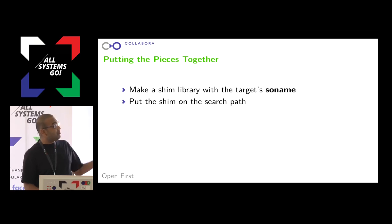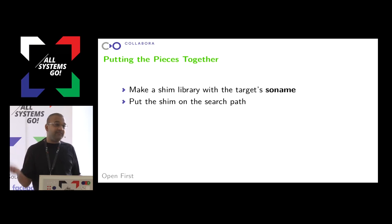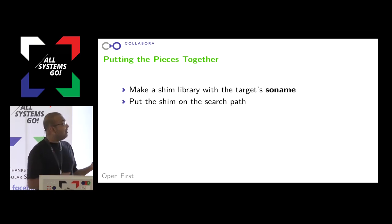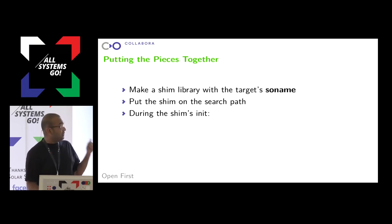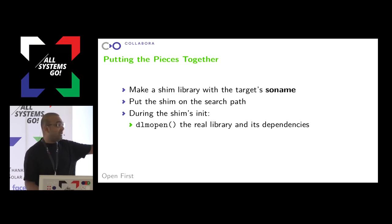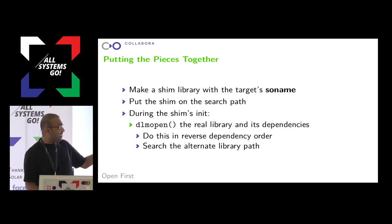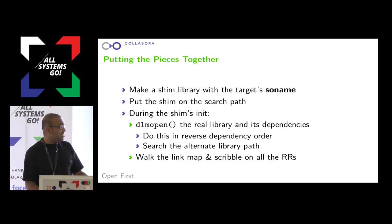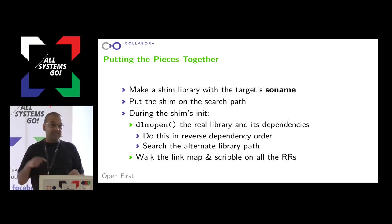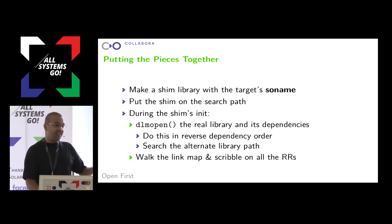We can now put these pieces together. We make a shim library with the target library's SO name and put it on the search path. For example, if I want to load libgl, there's no actual libgl inside my runtime with my containerized application, but I can put a shim libgl there which will be loaded by the linker. During the init phase of that shim library, I can dlmopen the real library and all its dependencies in reverse order, searching the alternate library path to get the host version. Then I walk the link map and scribble on all the relevant relocation records, so that all the functions in my binary — instead of going to the PLT fixup and finding the stub function in my shim — go to the real one. They never realize they've been diverted, because I've bypassed the normal symbol lookup code.